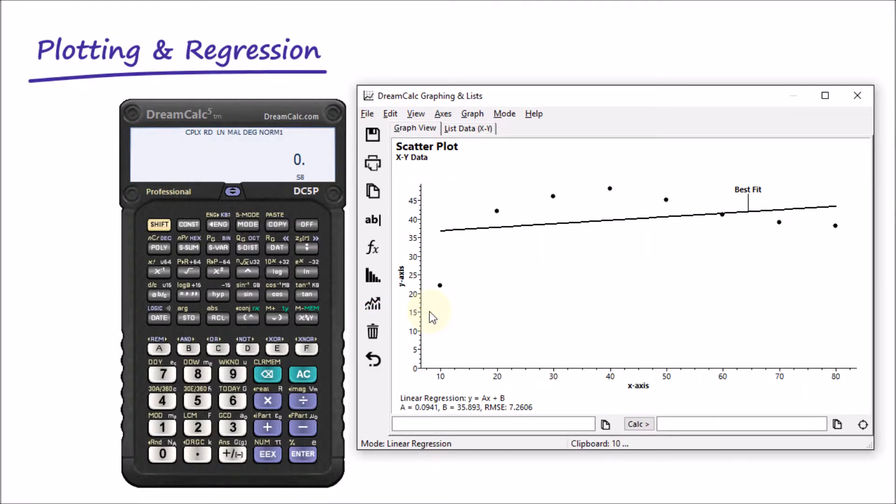Here we can see the line of best fit as found using linear regression, which isn't actually such a good fit at all. We should be able to do better by selecting a different regression mode.